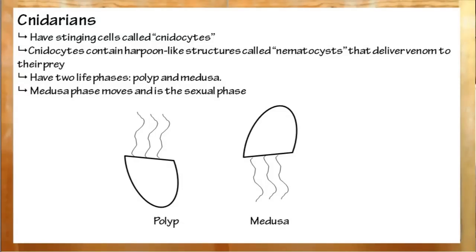Cnidarians have these things called cnidocytes, which are stinging cells. They have this mechanism called a nematocyst, which is basically a barb that can have toxin pumped in through. Cnidarians have two major phases in their life, polyp and medusa. As a polyp, cnidarians do not move and the cnidocytes are located on the tentacles. Prey is brought in after being stung.